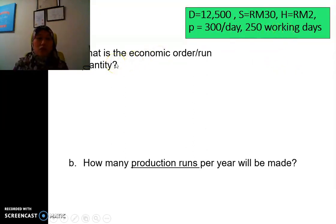For the first one, what is the economic order or run quantity, so these are the formula for POQ, and we see that it's a little bit like EOQ, but we have to include the P and the U. Remember the P is the production rate, and the U is the usage rate.